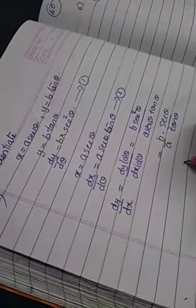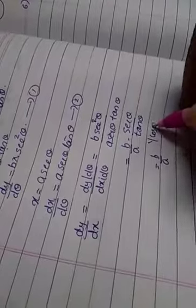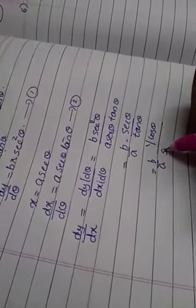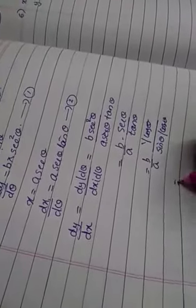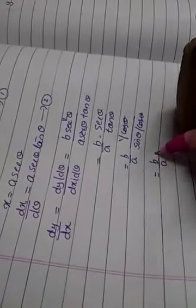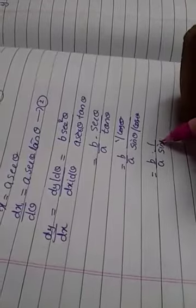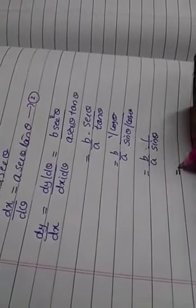We can again simplify. What is actually sec θ? sec θ is 1/cos θ. What about tan θ? tan θ is sin θ/cos θ. So, cos θ and cos θ gets cancelled giving you b/a × 1/sin θ. And what is 1/sin θ? cosec θ.